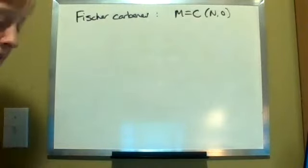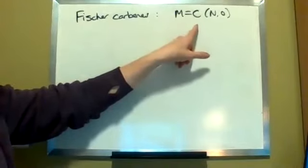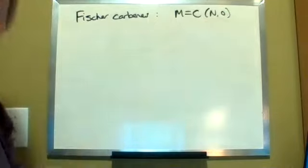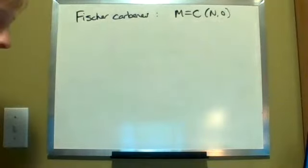First of all, what a Fischer carbene is - we're talking metal-carbon double bonds where the carbon is also bound to another heteroatom, so not just a carbon. Nitrogen and oxygen are the main ones I'll be talking about.